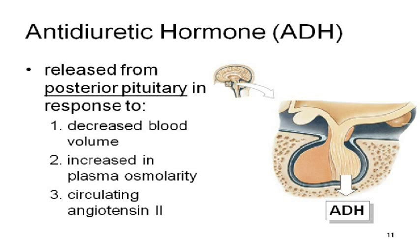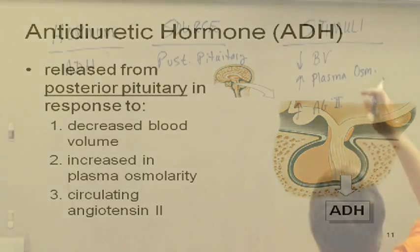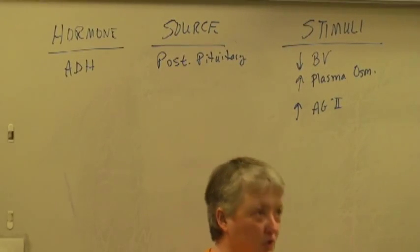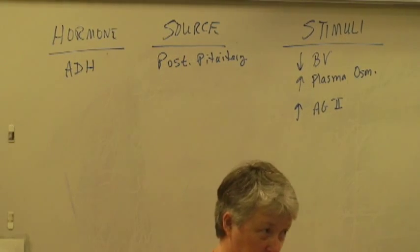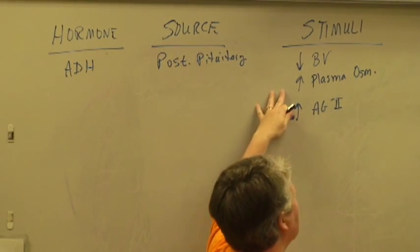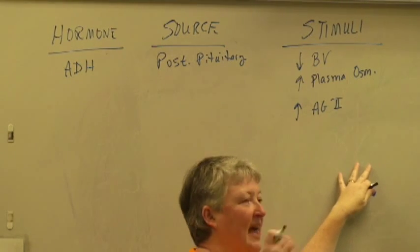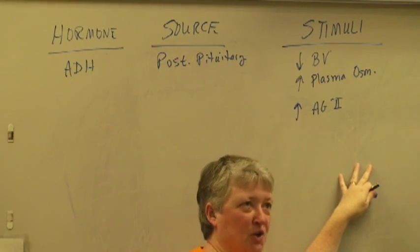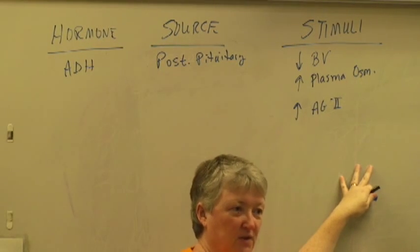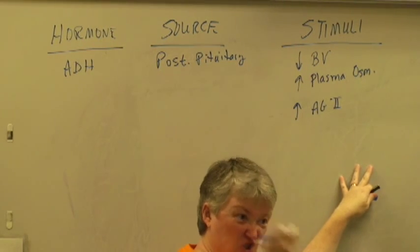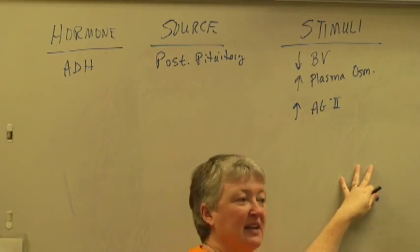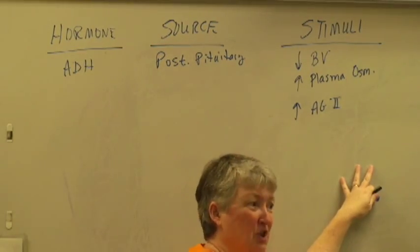Another stimulus is angiotensin II. Decreased blood volume means if you're bleeding, you're losing blood. Plasma osmolality refers to how concentrated your blood is. When you get dehydrated, you don't have enough fluid — you've got too much stuff dissolved. That's increased plasma osmolality. It's like Kool-Aid that hasn't been diluted out good.